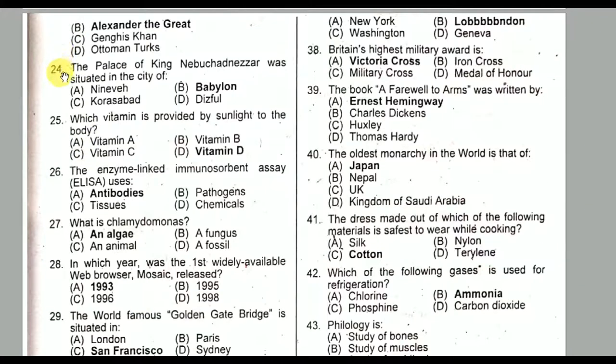Question number twenty-four: The palace of King Nebuchadnezzar was situated in the city of Option B — Babylon. Question number twenty-five: